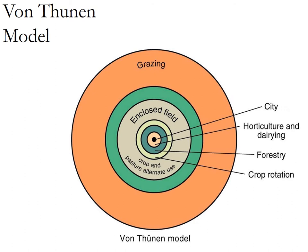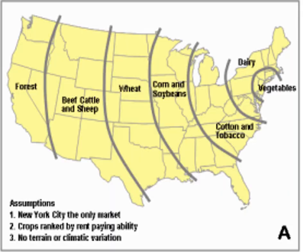Looking at Von Thunen's model, he uses concentric rings around the central node — the city. Right outside the city, you have dairy and horticulture: things that are perishable like fruits, vegetables, milk, and cheese. Around that, you have forestry, because the main building material was wood and trees are heavy, so you need it close. After that, the next three rings — beige, yellow, green — are all crop rotation: wheat, barley, rice, oats, whatever staple grain fuels the city with calories. And finally, we have grazing on the outside, because cows have legs and can walk themselves, making them cheap to transport.